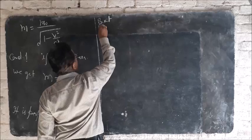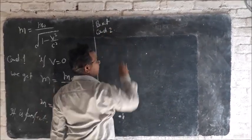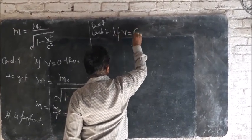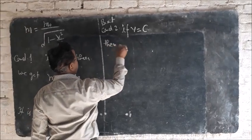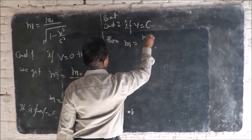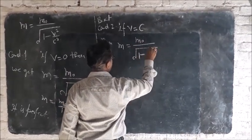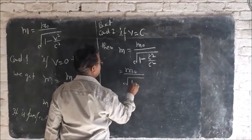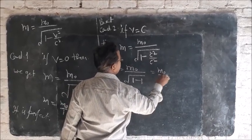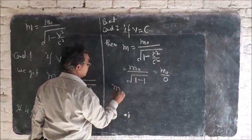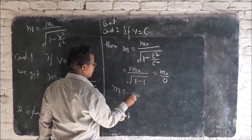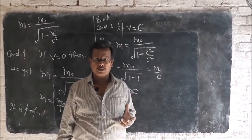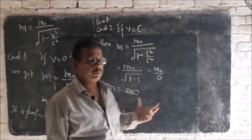Condition 2: if the velocity of the object becomes equal to the velocity of light, then moving mass equals rest mass upon the square root of 1 minus c squared upon c squared, that is rest mass upon the square root of 1 minus 1, that is rest mass upon 0. That is, moving mass equals infinite. It is fully impossible, because infinite mass is not possible — if the mass is infinite then all things will be destroyed.